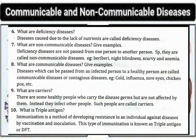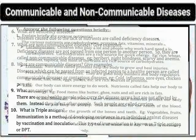Immunization is a method of developing instant resistance in an individual against diseases by vaccination and inoculation. This type of immunization is known as triple antigen or DPT.